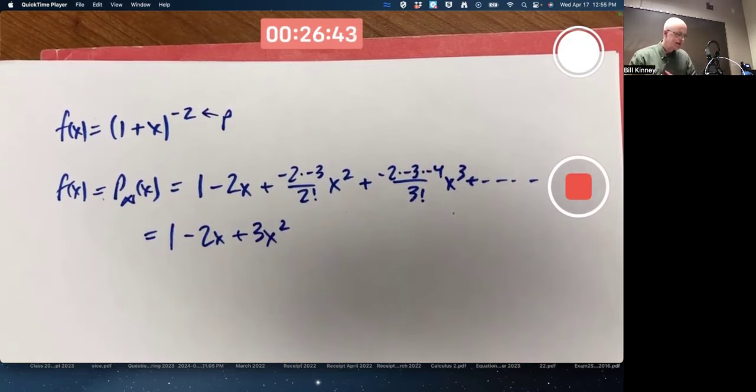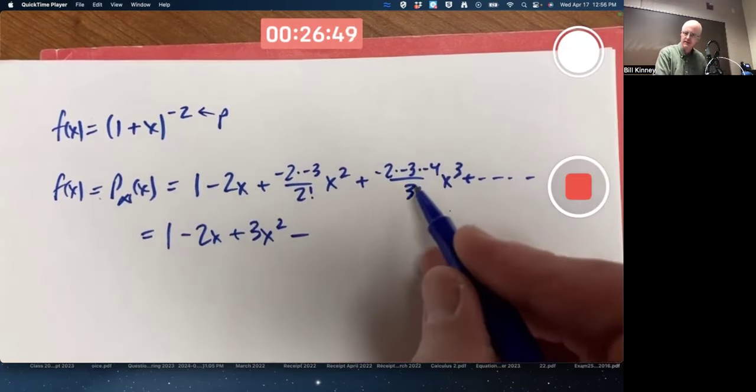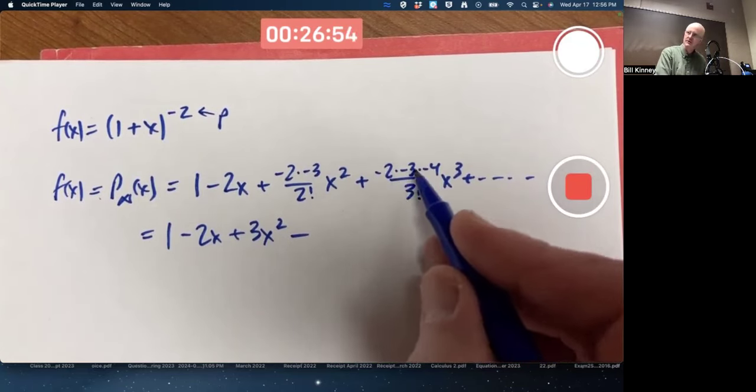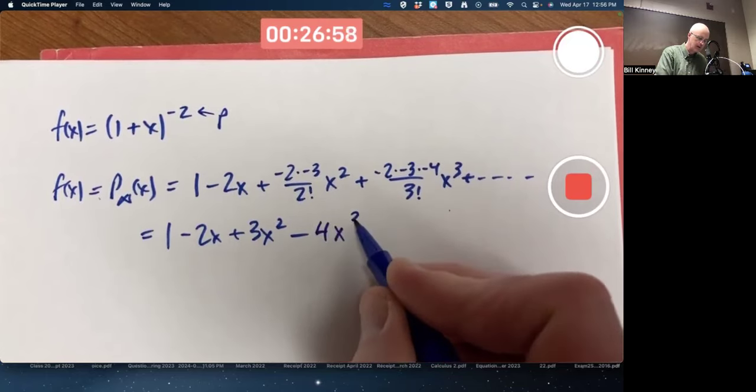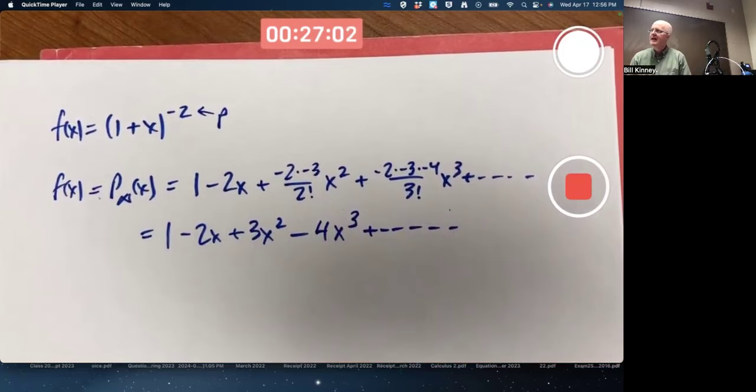Negative signs go away. There's two of them being multiplied. 2 factorial is 2. The 2's cancel. In the next one, we'll get a minus sign because of three negatives. The 3 factorial is 6, cancels with the 2 times 3. I'm left with the minus 4x cubed. Actually, we saw this example the other day. There's one derivation of its series.